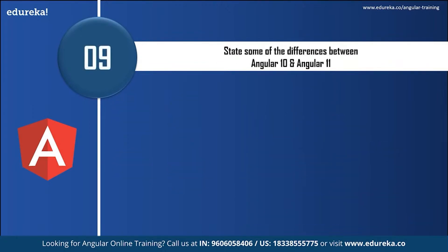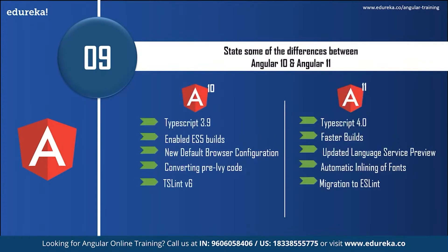Next: state some differences between Angular 10 and Angular 11. Angular 10 uses TypeScript 3.9 while Angular 11 has upgraded to TypeScript 4. Angular 10 uses enabled ES5 builds but Angular 11 uses faster builds. Angular 10 has a default browser configuration while Angular 11 upgraded to language service preview. Angular 10 converted pre-Ivy code and Angular 11 uses automatic inlining of fonts. TypeScript Lint version 6 is used by Angular 10, but Angular 11 migrates to ESLint.